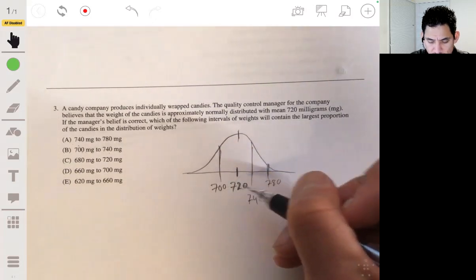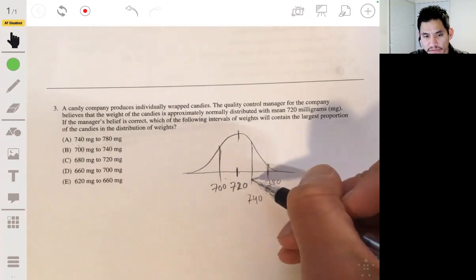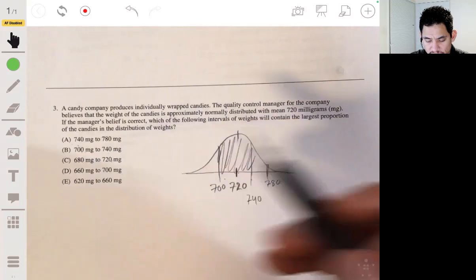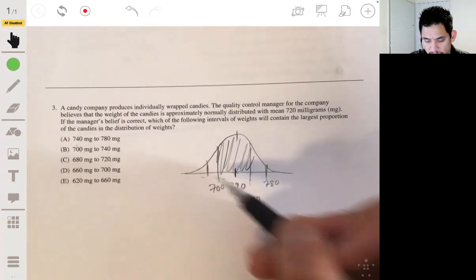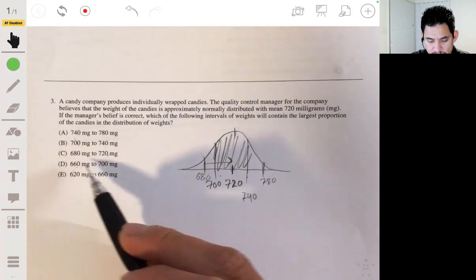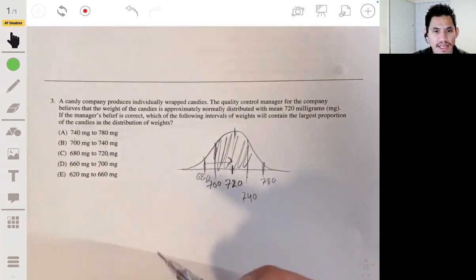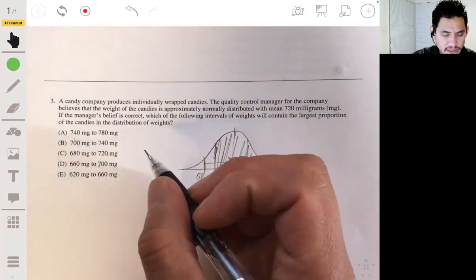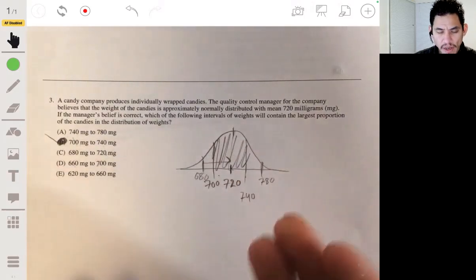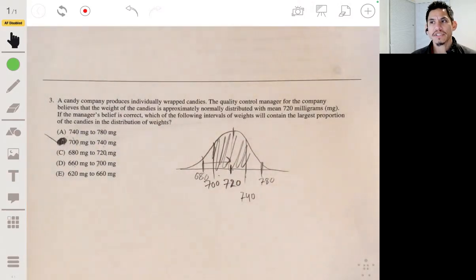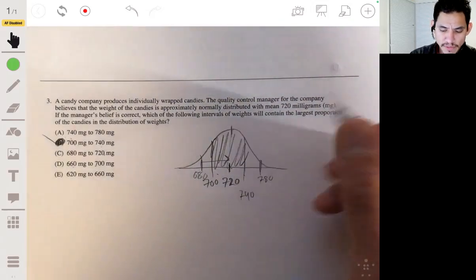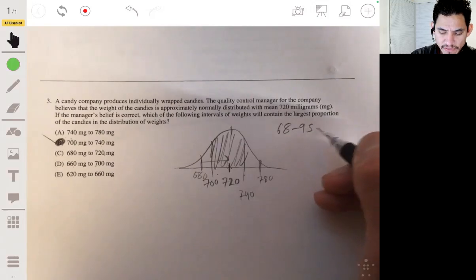So it contains all of this. 680 to 720. Again, it would be kind of like this one, but on the other side. So from here to here, 660. So the farther we get away from the center, the less of the proportion it would contain. So the answer is going to be B. Because again, if it was normally distributed, like one standard deviation within the mean on both sides contains 68% of the data. Remember the 68-95-99.7 rule.